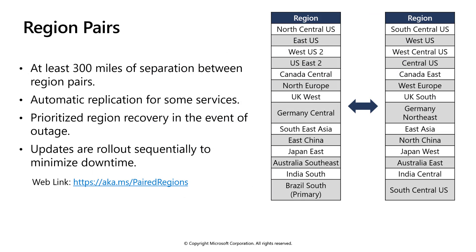Azure also includes the concept of region pairs. Each Azure region is paired with another region. In order to promote disaster recovery and high availability, Azure prefers at least 300 miles of separation between data centers in a regional pair. Some services provide automatic replication to the paired region, others do not. It's important as you architect an application to determine which services automatically replicate to paired regions. In the event of a service or regional outage, recovery of one region is prioritized out of every pair.